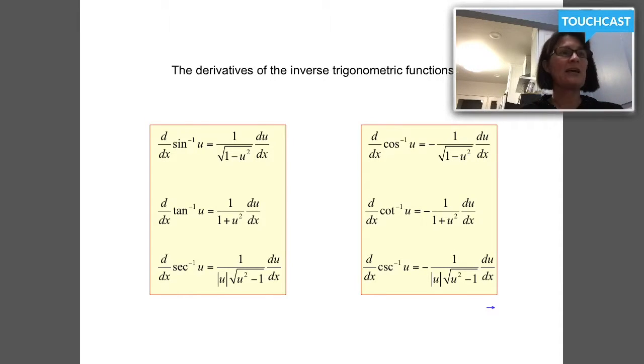Pause the video, write all these down. I'll point some things out so that as you're writing them down you'll notice it can help you memorize them, which you're going to have to do. Notice co-functions: sine and cosine are co-functions, tangent and cotangent are co-functions, secant and cosecant are co-functions.